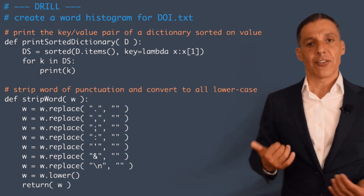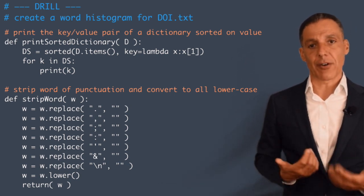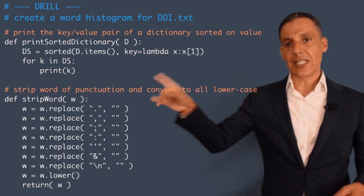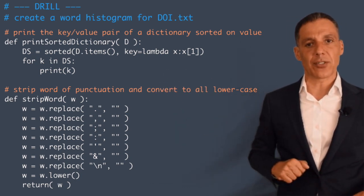So think through the logic of how you want to do this. Obviously you're going to use a dictionary. You've got to do a little bit of file I/O which we've already seen before, and then you're going to use these two functions to help you out. When we come back, I'm going to show you my solution.